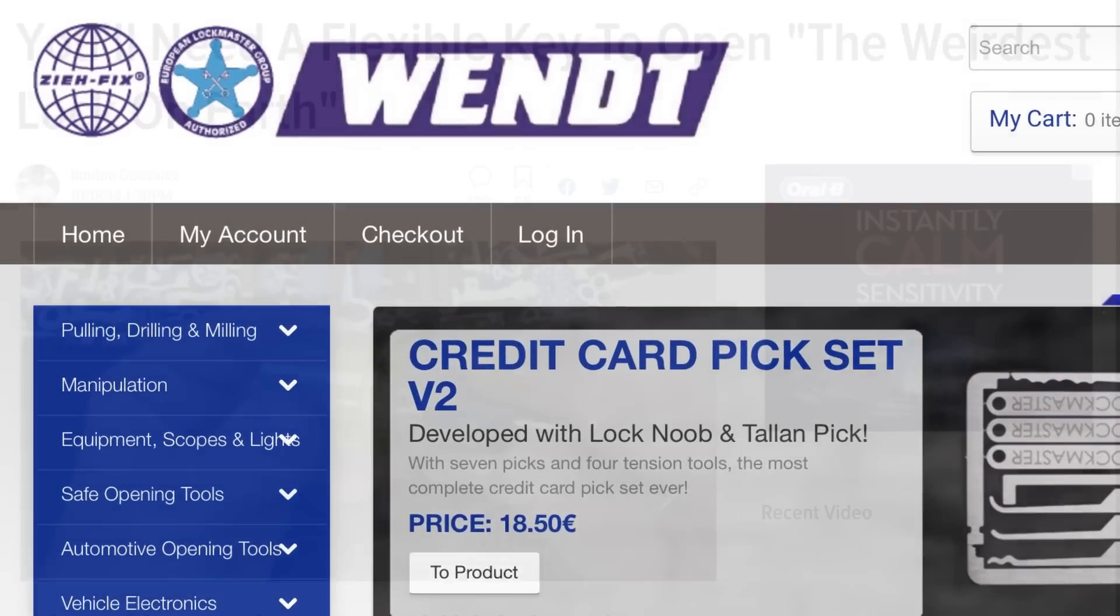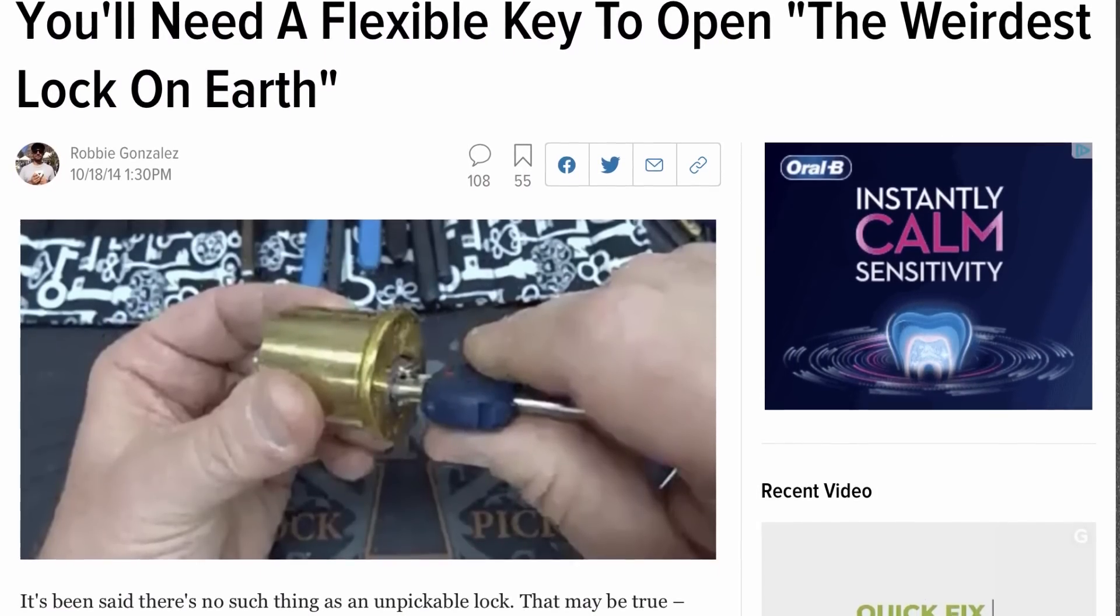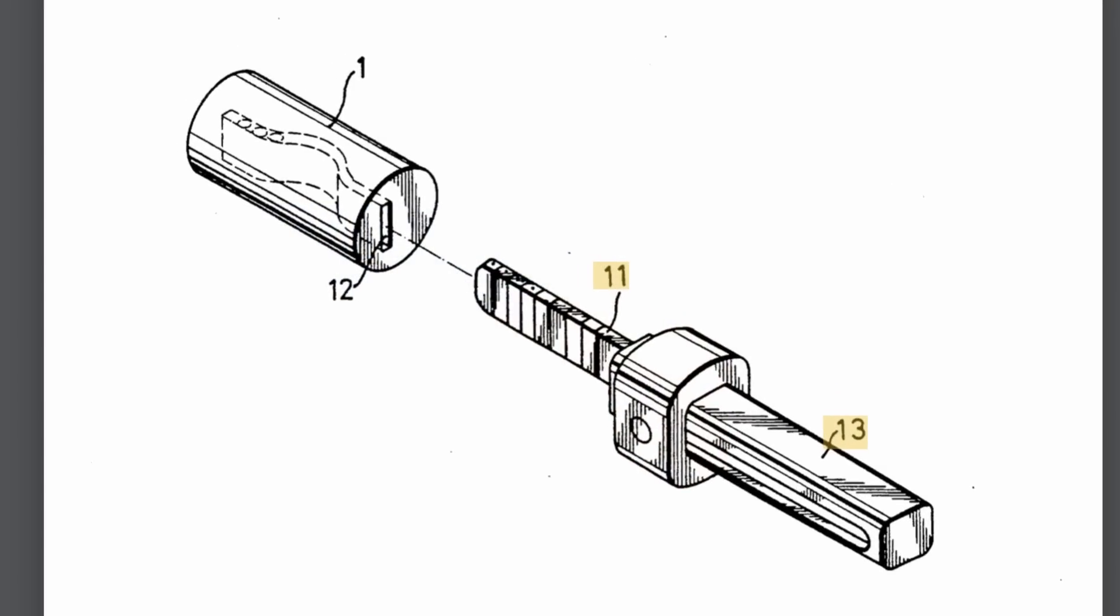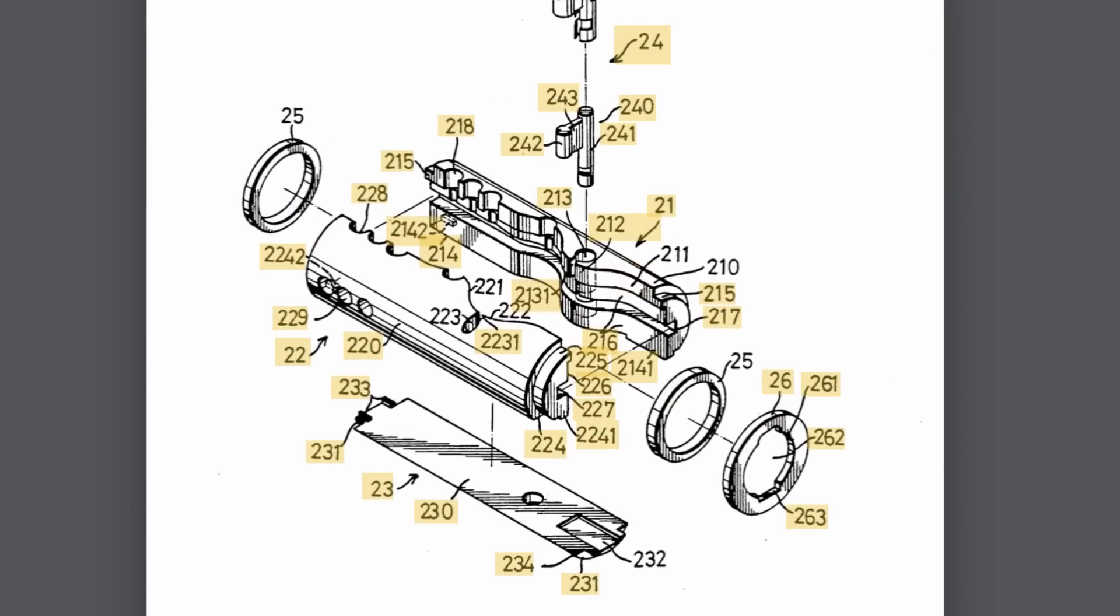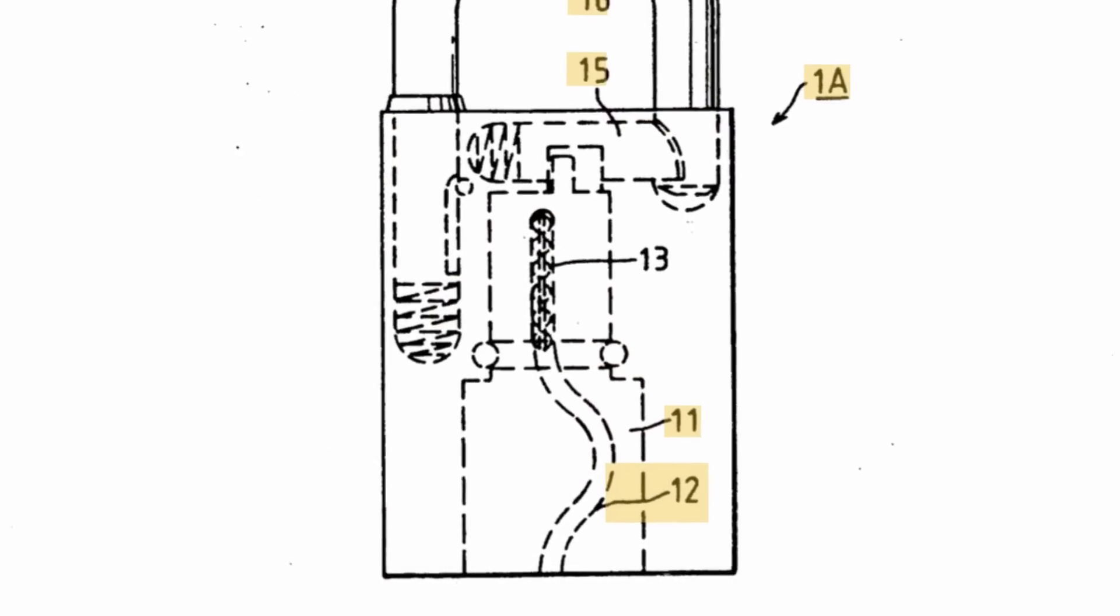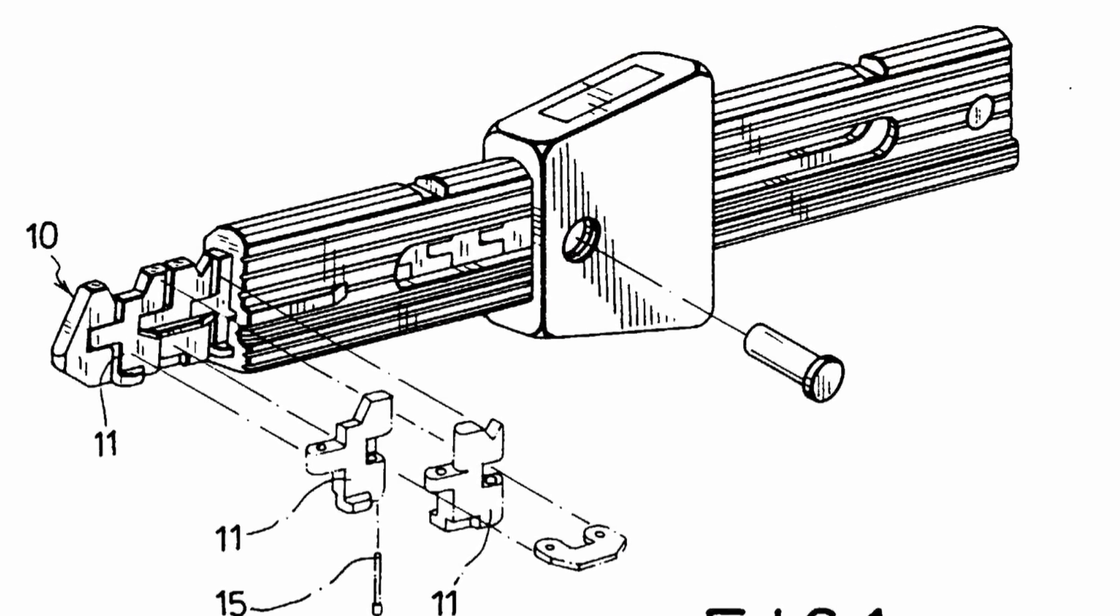Researching this lock led me to a Gizmodo article, also linked in the description, that highlighted some patents for a snake key design, going all the way back to 1990, with a later revision of the design being patented in 1995.